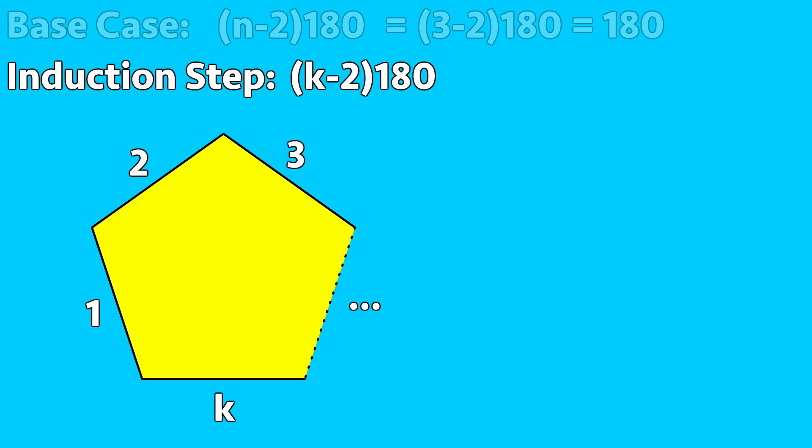We move on to the induction step. Here we have a polygon with k sides, and we are going to assume that it has a sum of interior angles equal to (k-2) times 180. This is the inductive hypothesis.